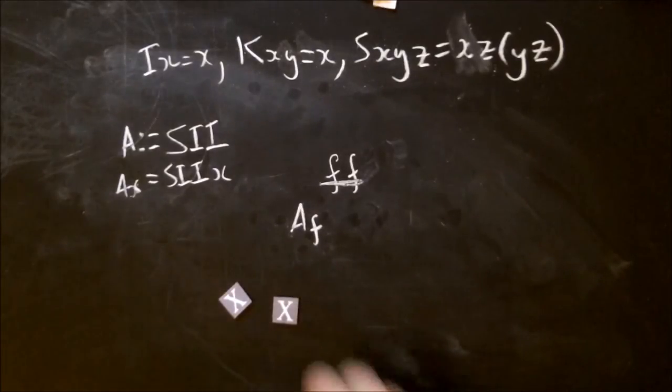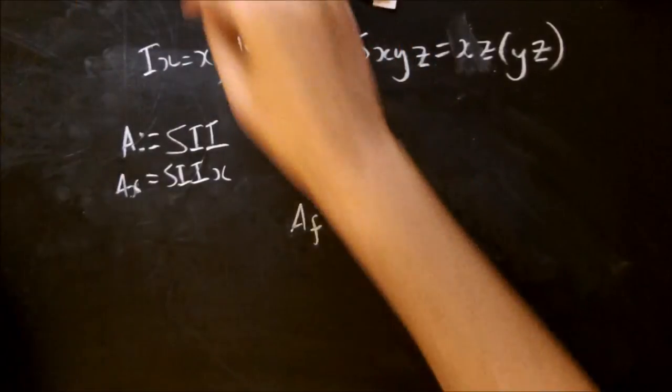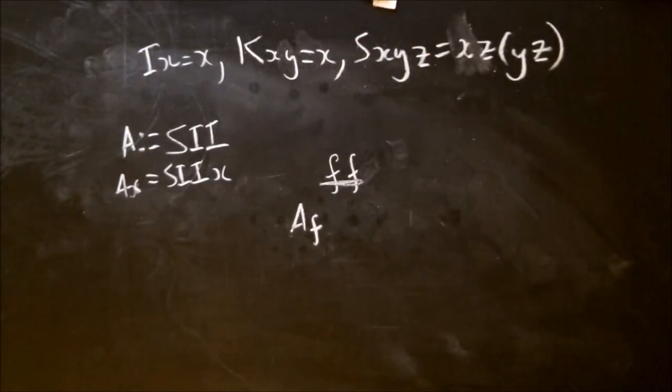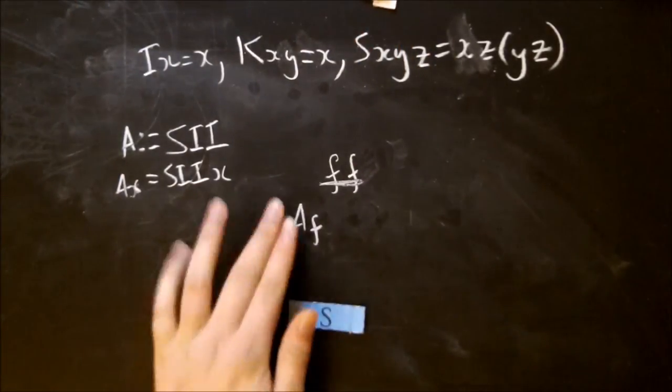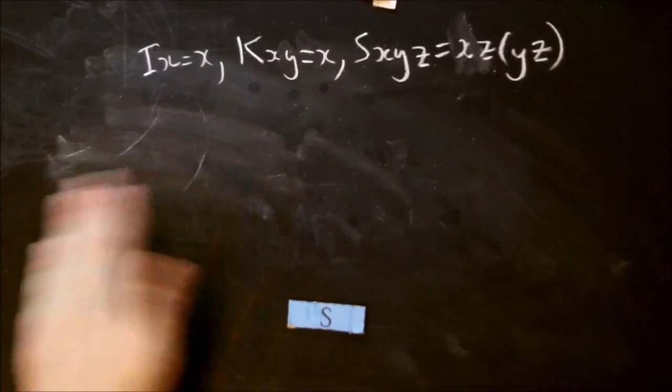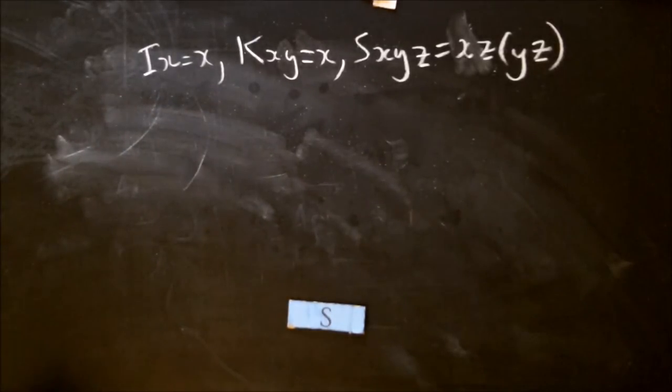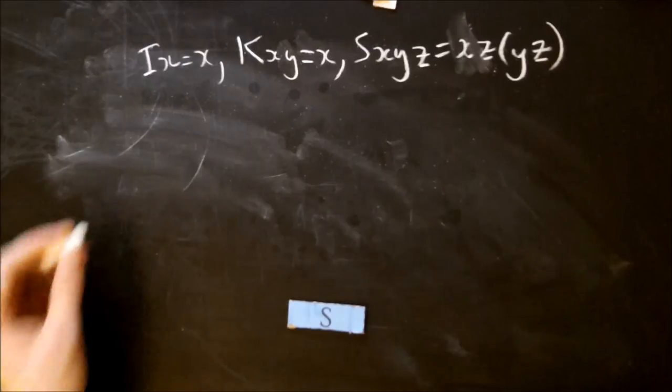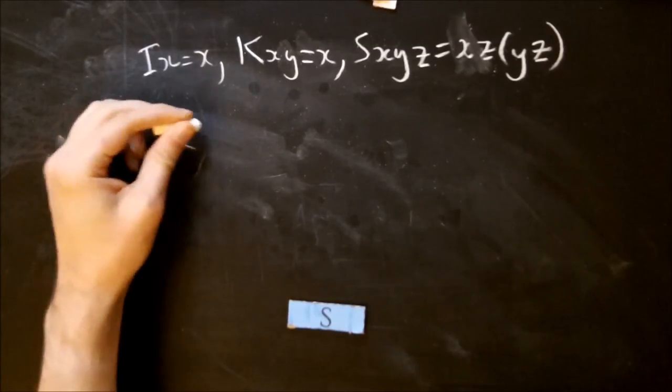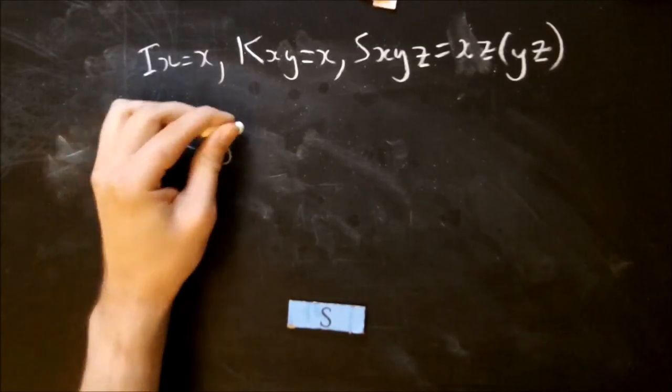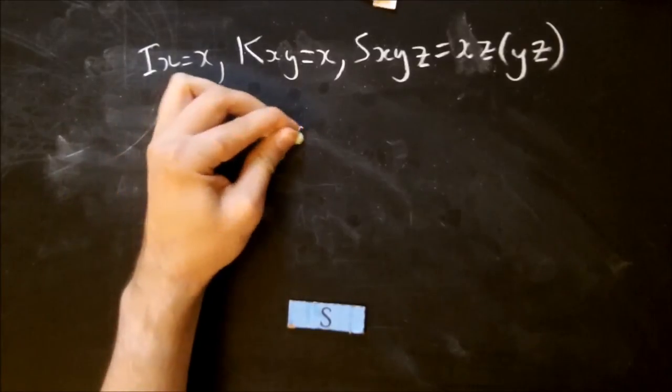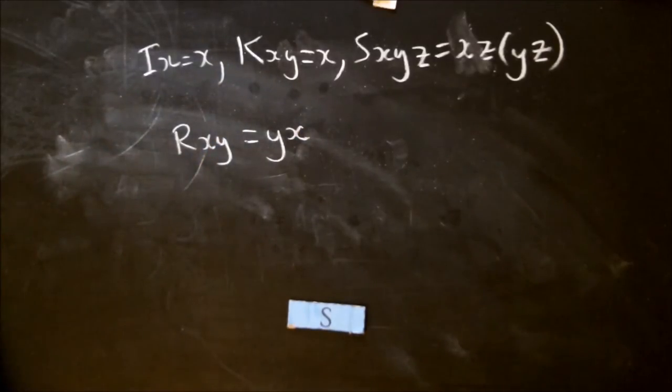So the next one, you can make a combinator which takes two arguments and swaps them around. So I'm going to make an operator called r.